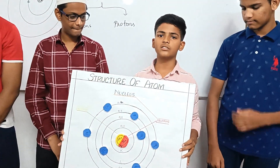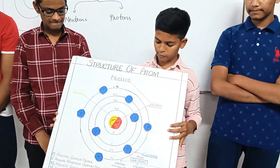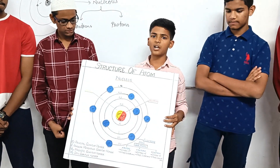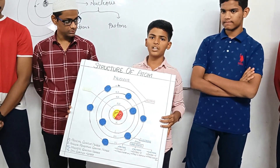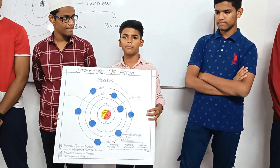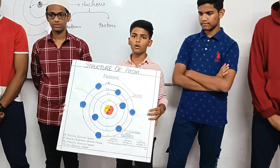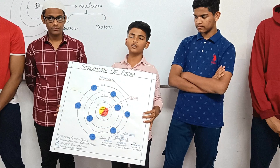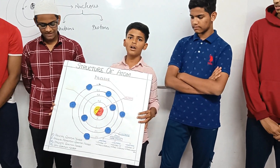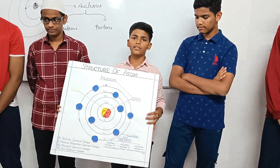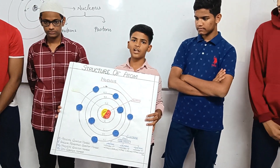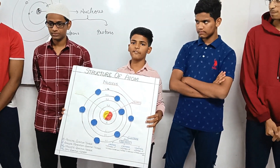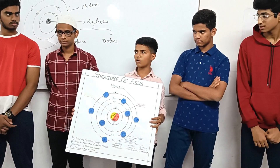The atom consists of 4 types of orbitals: S, P, D, and F. S is spherical in shape, P is dumbbell in shape, D is double dumbbell in shape, and F is multi-conference in shape. The S orbital holds 2 electrons, P holds 6 electrons, D holds 10 electrons, and F holds 14 electrons.